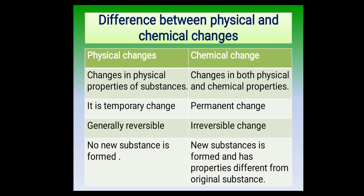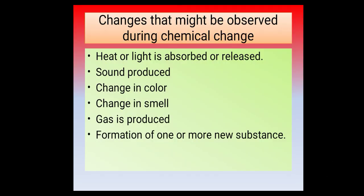In a physical change, no new substance is formed. Whereas in case of a chemical change, a new substance is formed due to the change in chemical properties, and whatever new substance is formed has properties different from the original substance. Additionally, chemical changes can also be called chemical reactions. In chemical changes, heat or light may be absorbed or released, sound may be produced, there may be a change in color, change in smell, or a gas may be produced, and formation of one or more new substances may take place.